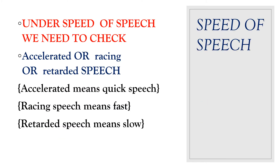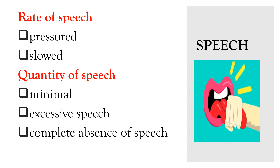Under speed of speech, check for accelerated speech (very quick), racing speech (fast), or retarded speech (very slow). Under rate of speech, check for pressured speech — too much stress or irritability while expressing each word — or slow speech. Under quantity of speech, check how much the patient is talking: minimal speech, excessive speech, or complete absence of speech.